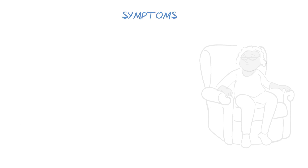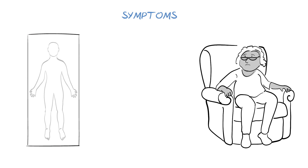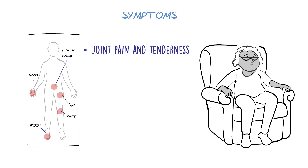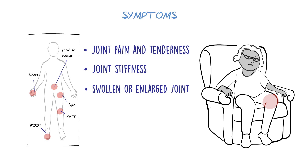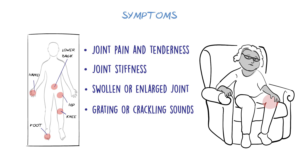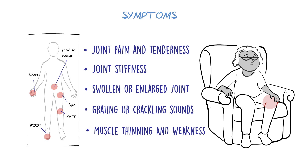This leads to the main symptoms of osteoarthritis, which most commonly affect the knees, hips, joints, hands, feet, and lower back. Joint pain and tenderness is usually worse at the end of the day or after activity. Joint stiffness usually happens after resting, but often wears off after movement. The joint may appear swollen or enlarged, or may make grating or crackling sounds. Muscle thinning and weakness can occur, and the joint may give way if it has become less stable.